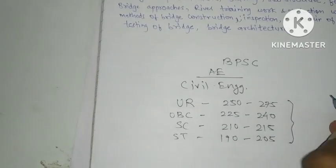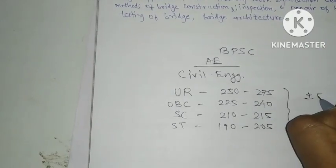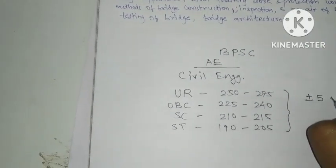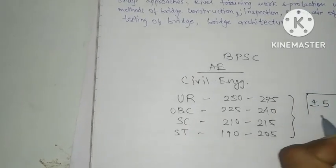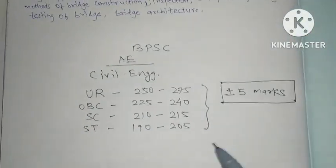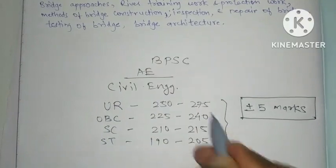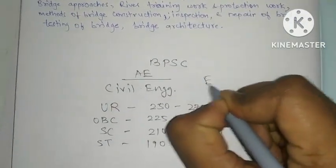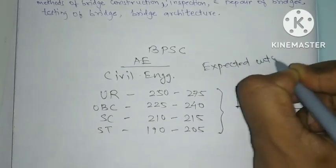In all this cutoff, there will be plus or minus 5 marks up and down. So there are the chances of getting the cutoff plus 5 or minus 5 from this expected cutoff. So this is your expected cutoff.